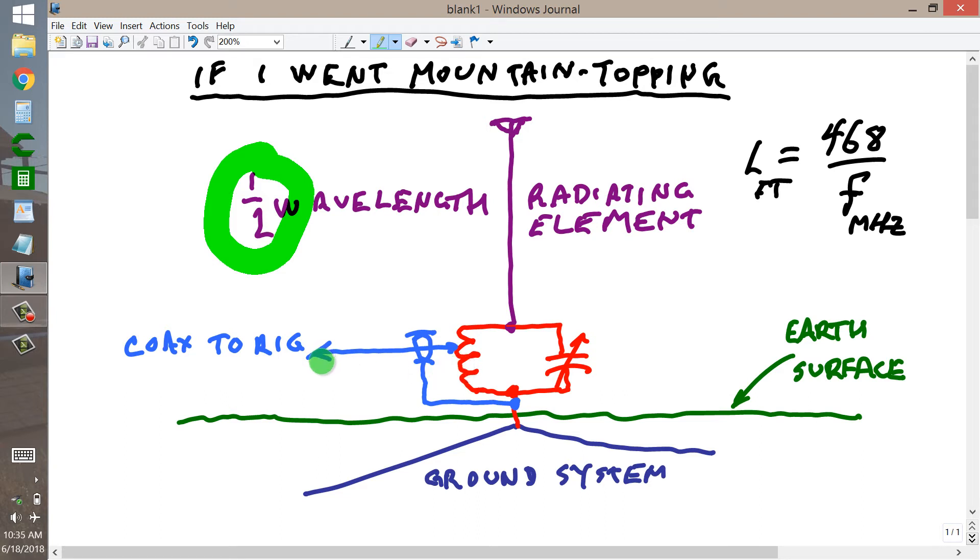That is an ideal 1.5 wavelength tuning network for a 1.5 wavelength radiator. Your ground system does not have to be very elaborate. It can just comprise a few radials, preferably a quarter of a wavelength long each, laid on top of the ground, and possibly a short ground rod pounded in just to hold them there. But the impedance is so high here that you really don't need that much of a ground system.